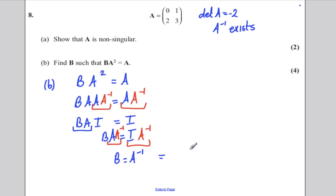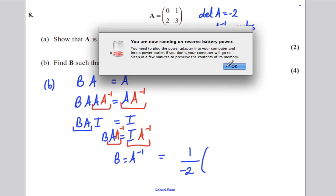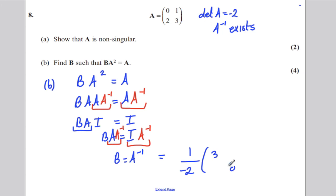How do we find the inverse matrix? It's 1 over the determinant, 1 over negative 2, and then you swap these so it would be 3, 0 and negative 1, negative 2. It's as simple as that.